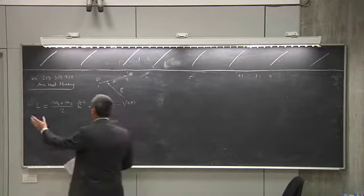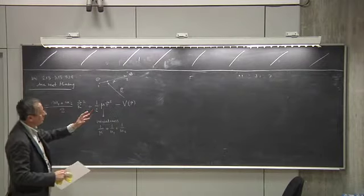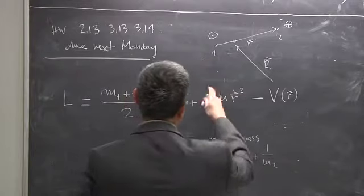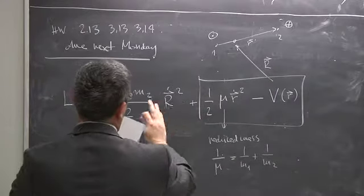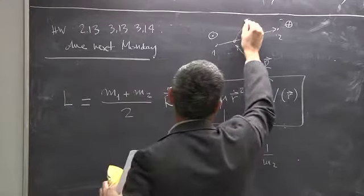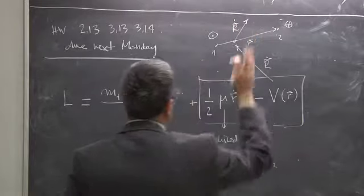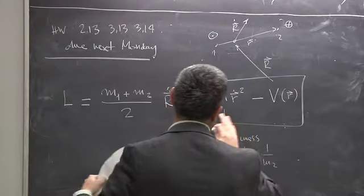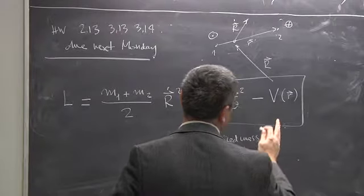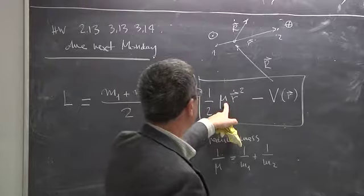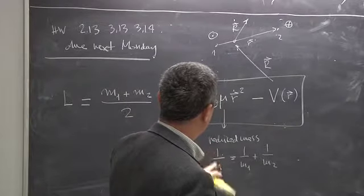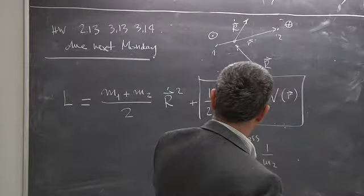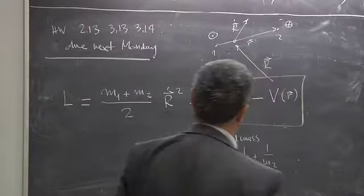Now that we have reduced the two-body problem to the much simpler one-body problem, I look only at the relevant part of the Lagrangian. I forget about the center-of-mass term — it's just the descent of a mass moving with constant velocity in some direction. The Lagrangian is a one-body problem with this reduced mass: once I give you the two masses, I compute mu, plug it in, and I have a one-body problem.